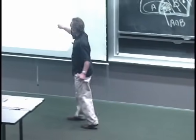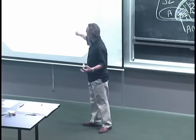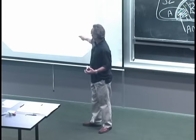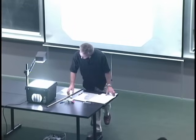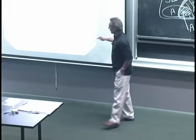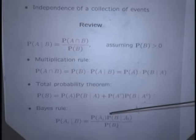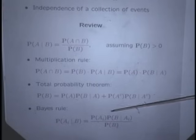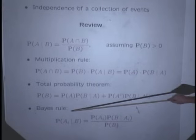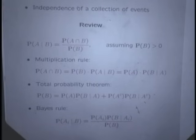We saw that we can divide and conquer in calculating probabilities of a complicated event by breaking it into different scenarios. Event B can happen either together with A or together with A-complement. So the total probability of B is the probability of A intersection B plus the probability of A-complement intersection B. These are the multiplication rule and the total probability theorem.